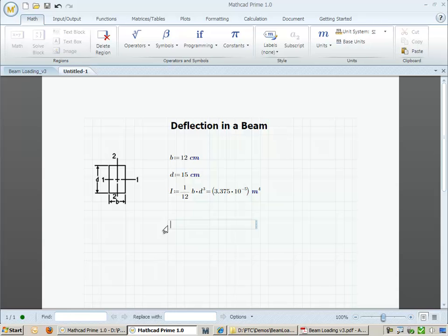We define the elastic modulus of the material that we want to use in our beam. Again, we can add units, in this case, gigapascals.